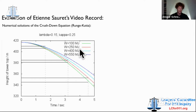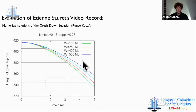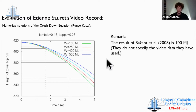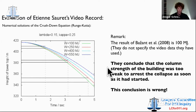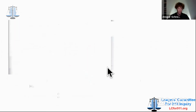The 250 megajoule solution means that an energy of 250 megajoules was dissipated during the crushing of a story, and the average upward force is this energy divided by the story height. A similar result was obtained by Bajand and others in 2008 already. What they conclude is that the collapse continues — that the building's resistance force was too weak to arrest the collapse as soon as it had started. But this conclusion is false, because they miss certain observations which I will show you now.